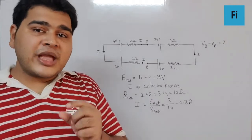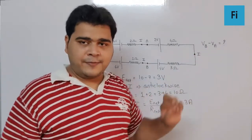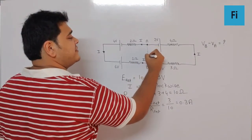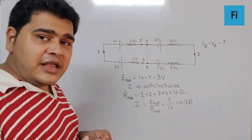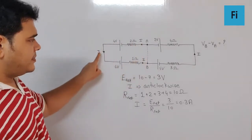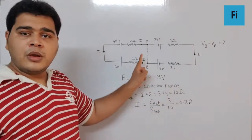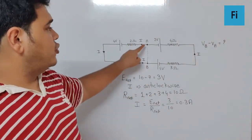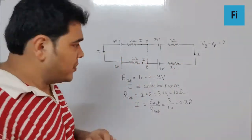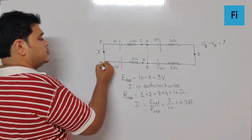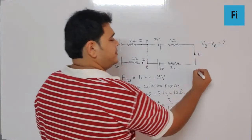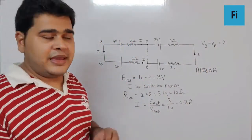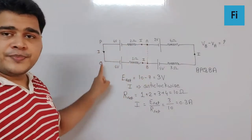Now we need to find the potential difference between B and A. We can apply KVL across either of the two loops by connecting an imaginary wire between points A and B. Either loop gives the same answer. Here I am going with the loop APQBA.